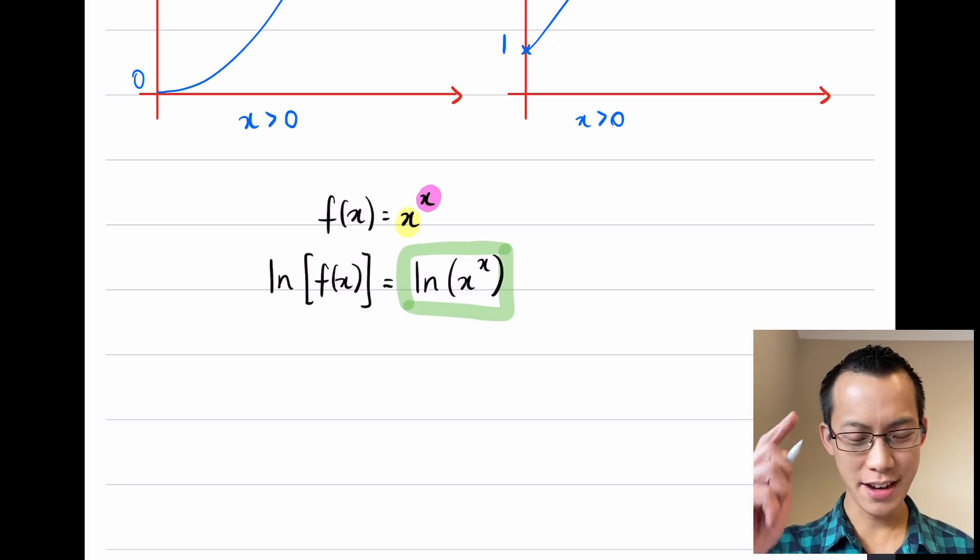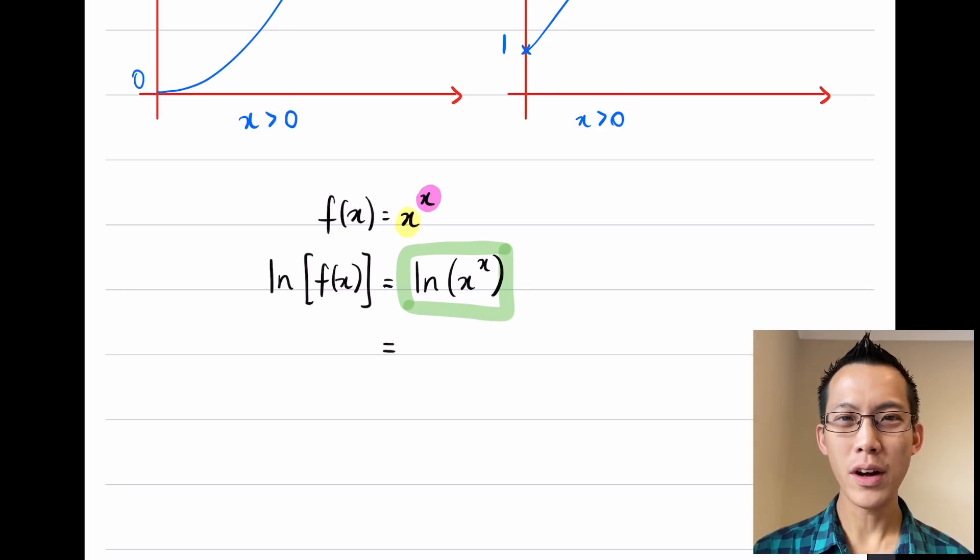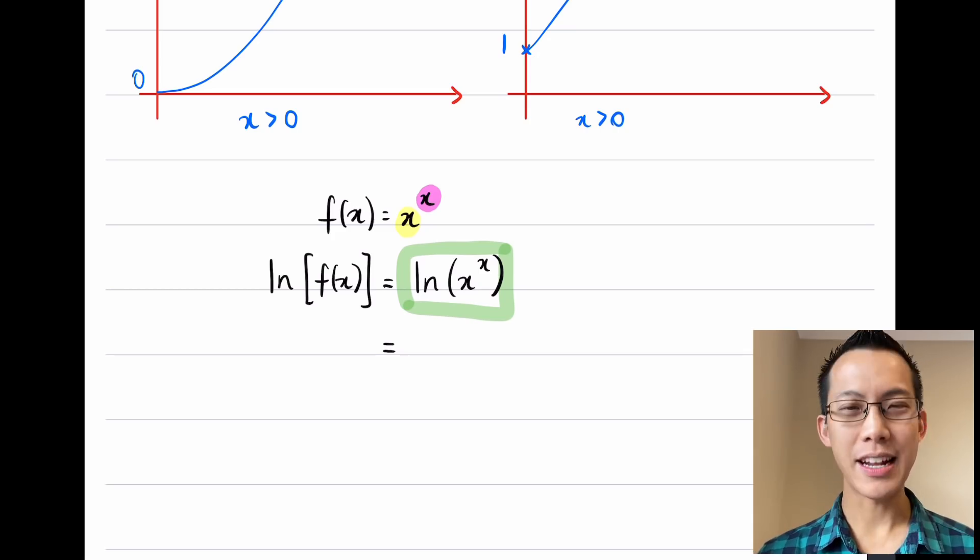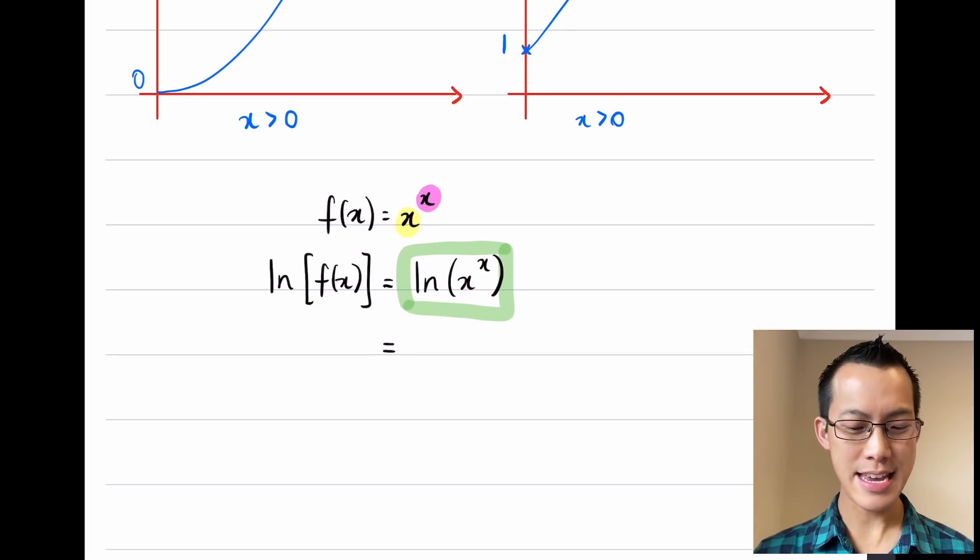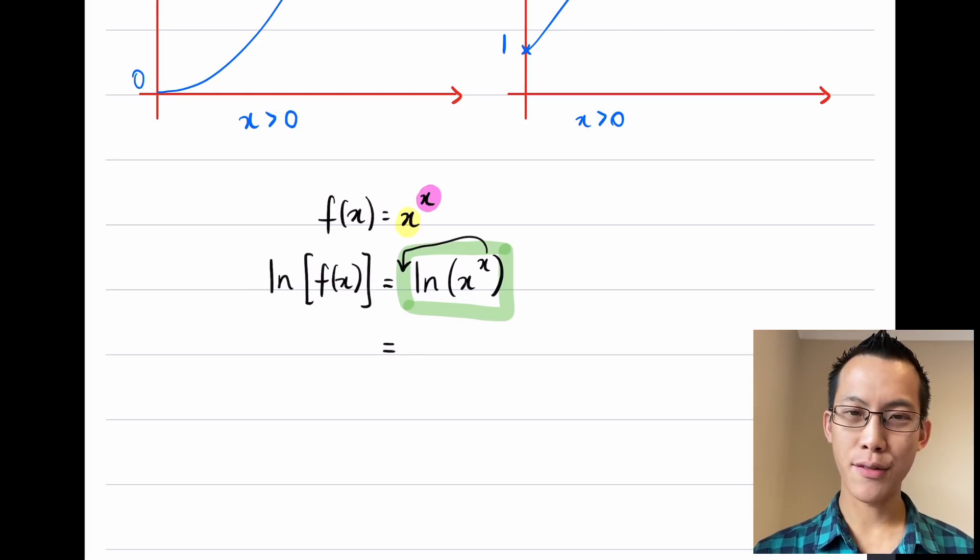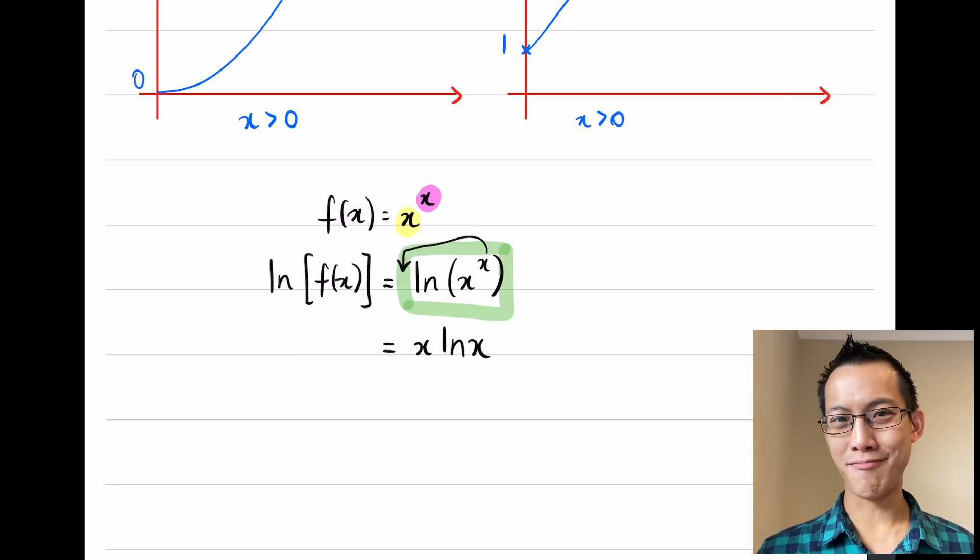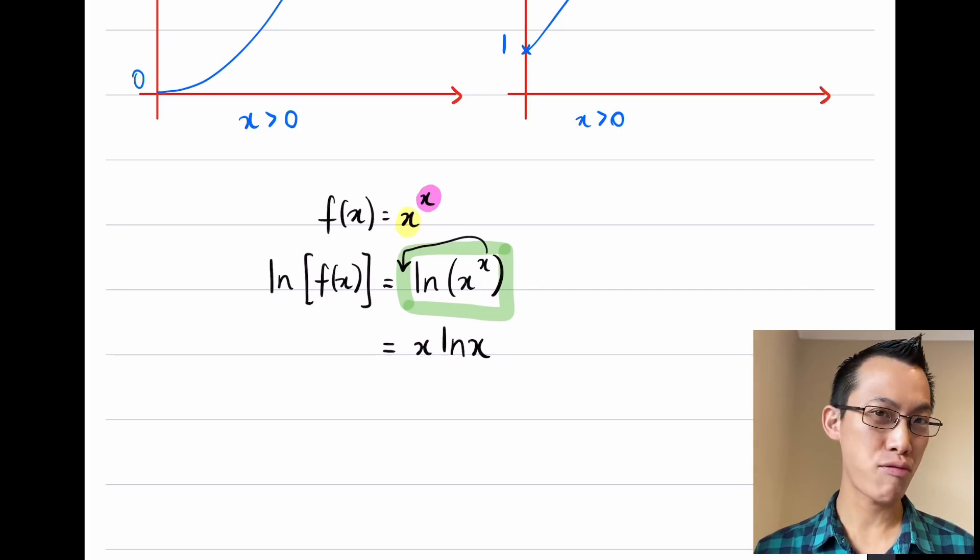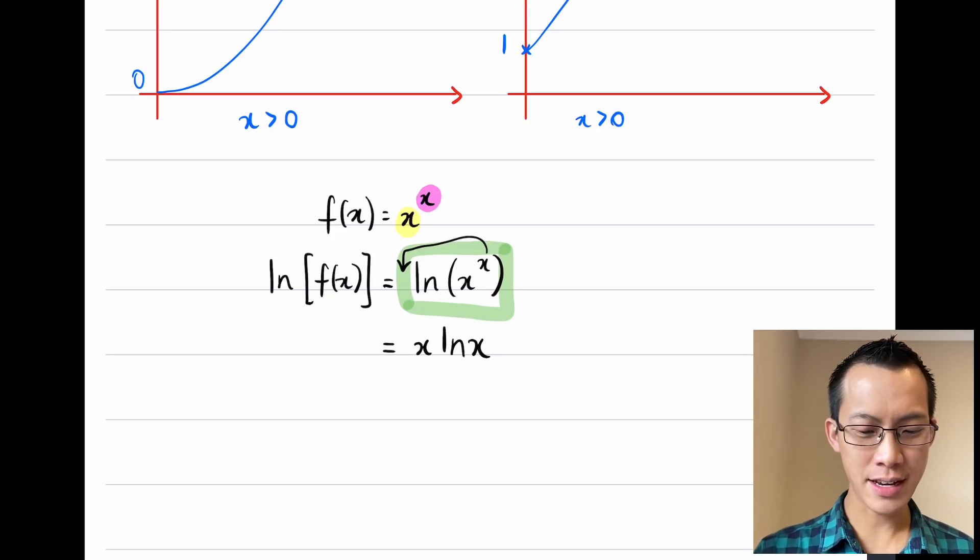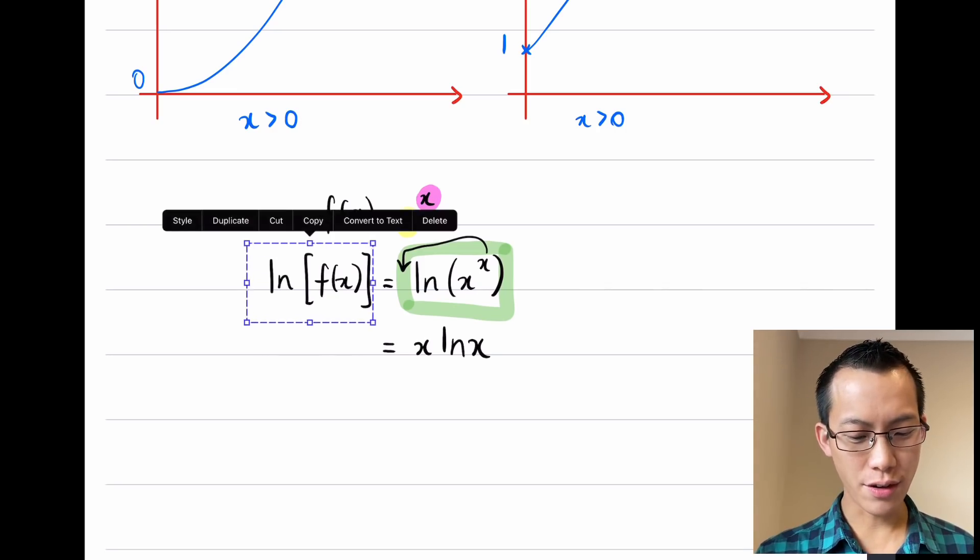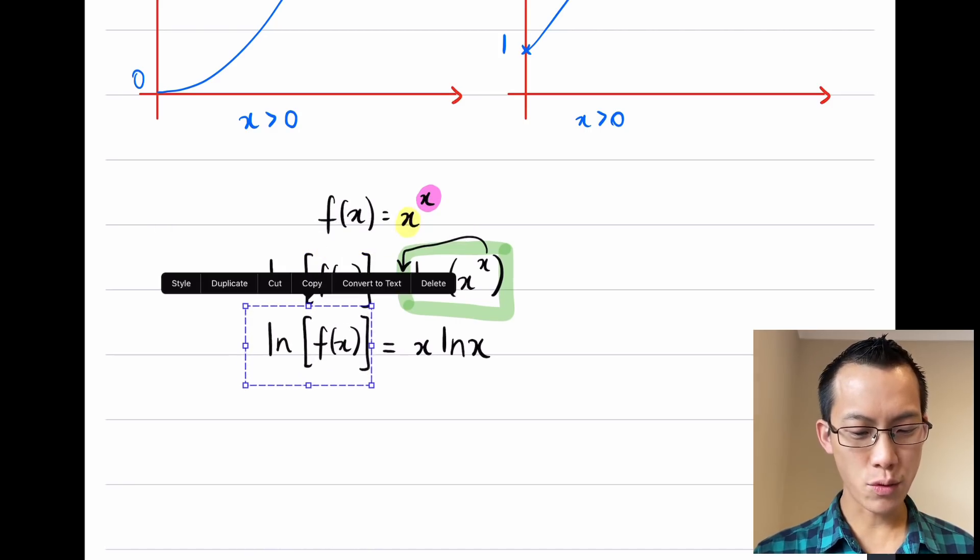What law can I use with logarithms that allows me to get rid of that x in the index? I can bring down this index out the front, so I can write the right hand side as x times log x. This is still not particularly neat, but at least I can work with it. This is something I do know how to differentiate using the product rule. On the left hand side I still have log of f(x).